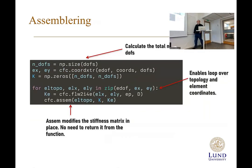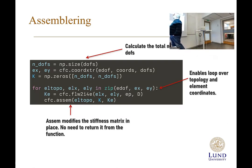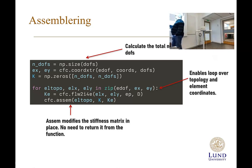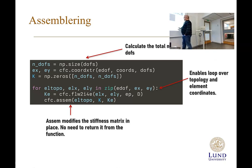Next we assemble the problem. Since we don't know the exact number of elements in advance, we query NDOFS using size to get the number of degrees of freedom. We create our element coordinate arrays using extractEldisp, create the stiffness matrix using np.zeros of size NDOFS by NDOFS, and then loop over elements to do the assembly—calling our flow element function with the local coordinates, element properties, and then assembling.